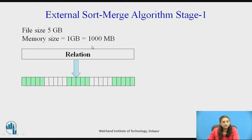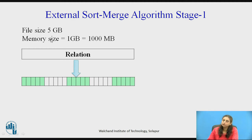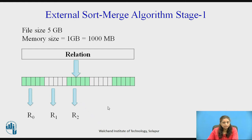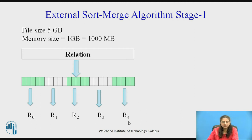Consider the example of a file of size 5 GB with a memory size of only 1 GB. The complete 5 GB file is not going to fit in main memory, so in the first stage we divide it according to memory size. The 5 GB file can be divided into 5 parts. Take the first 1 GB part, sort it, and write it back to disk. Repeat for each part. This generates 5 sorted runs, so N equals 5.